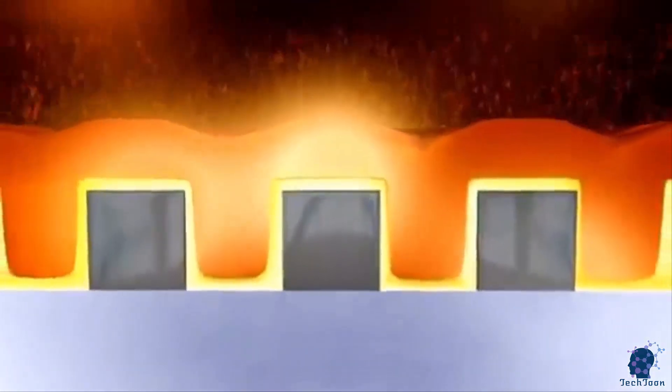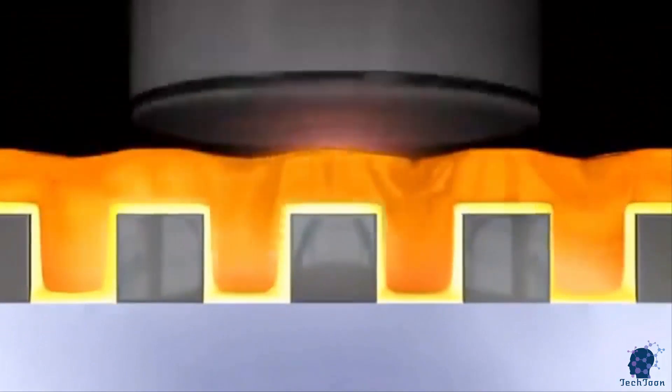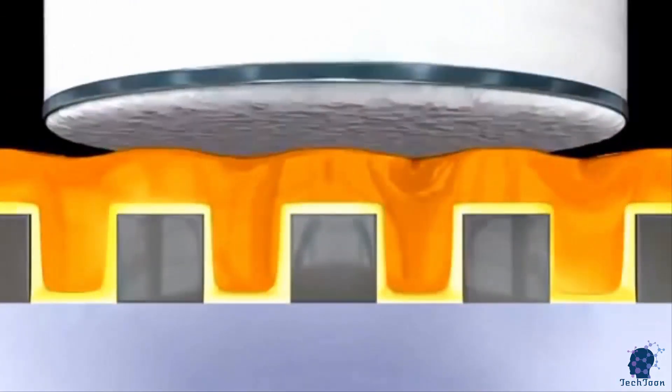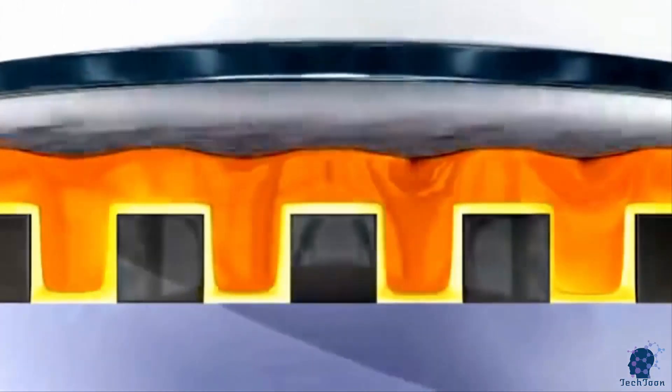The trenches are then filled with copper. Finally, the excess copper is ground down to the edges of the trenches. This insulates each interconnect from the others.